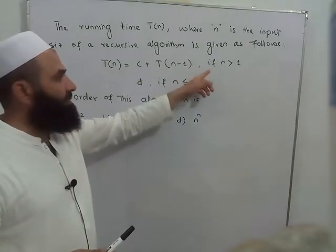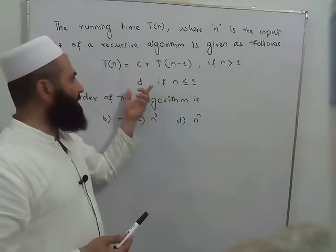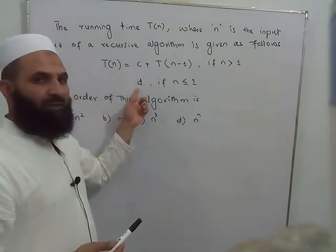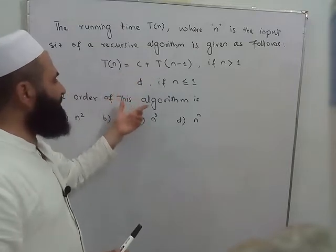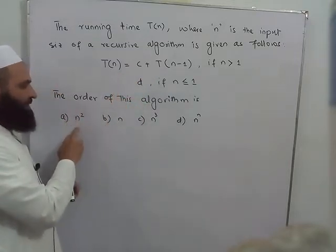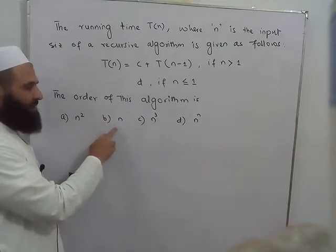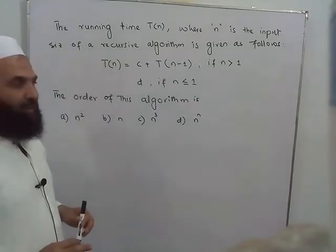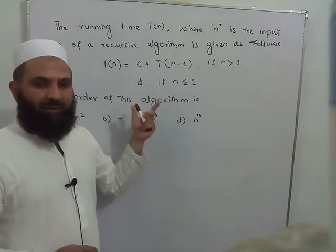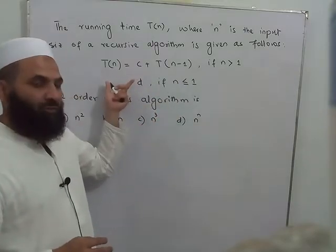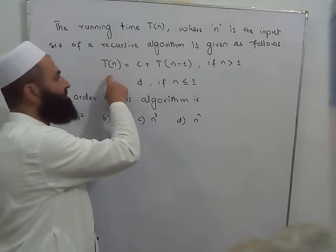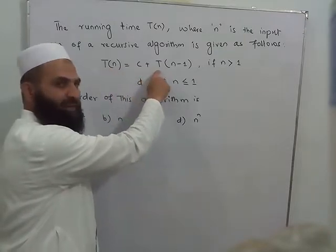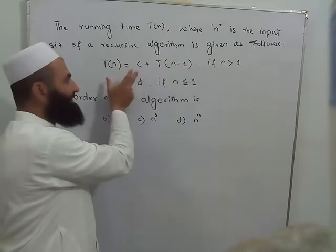Recursive algorithm ka jab n ki value 1 se greater ho, aur agar n ki value 1 se less ho ya 1 ke equal ho to phir T of n ki value d hai. Hume keh rahe ki is algorithm ka jo order hai wo ya n square ke barabar hai, n ke barabar hai, n cube ke barabar hai, ya n raise to the power n ke barabar hai. Yaad rakhiye ki jab hamare paas recurrence relation given ho, yaini ek function running time ko T of n ki definition mein — us ki value mein the same function is repeated again but with a smaller value — such an equation is called recurrence relation.